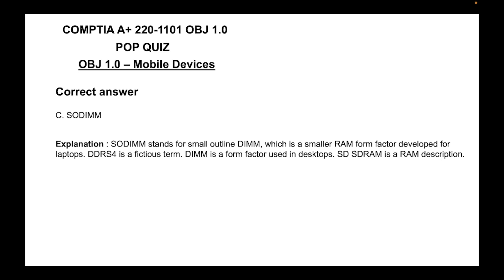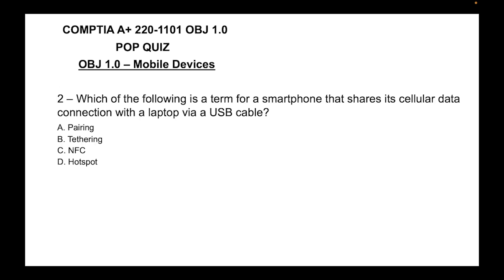The correct answer is C, SO-DIMM. SO-DIMM stands for Small Outline DIMM, which is a smaller RAM form factor developed for laptops. DDR4 is a fictitious term as listed. DIMM is a form factor used in desktops, and SDRAM is a RAM description.